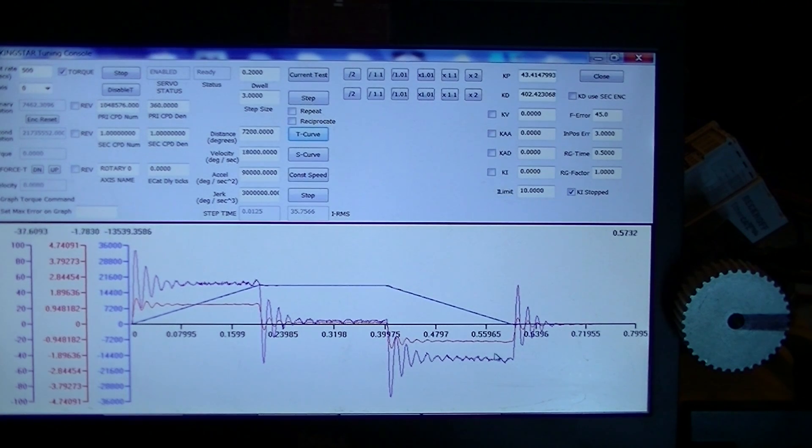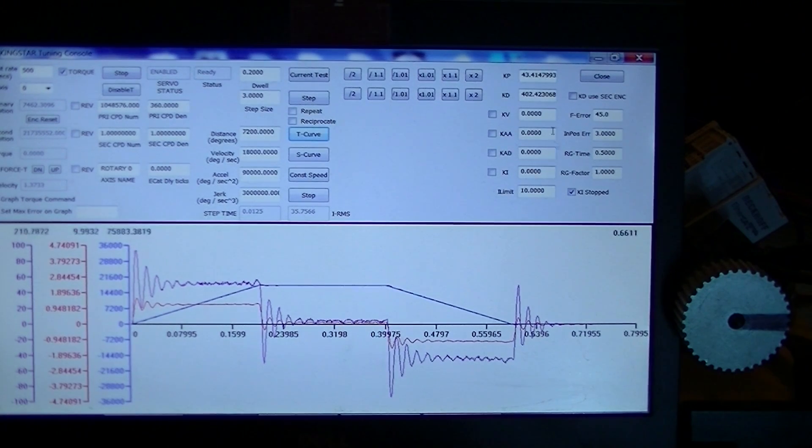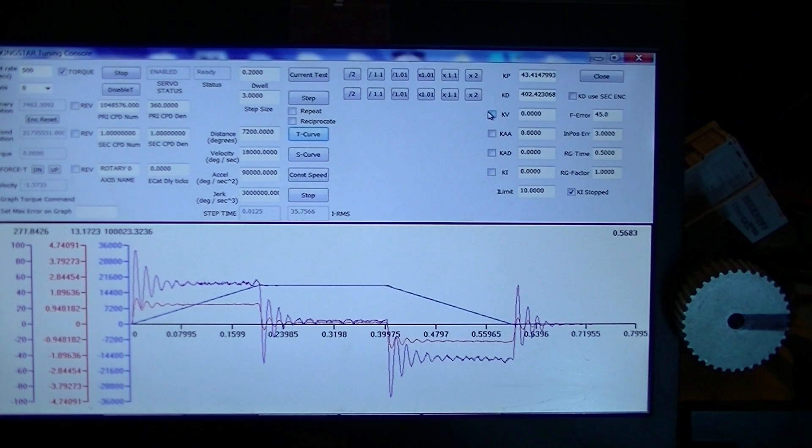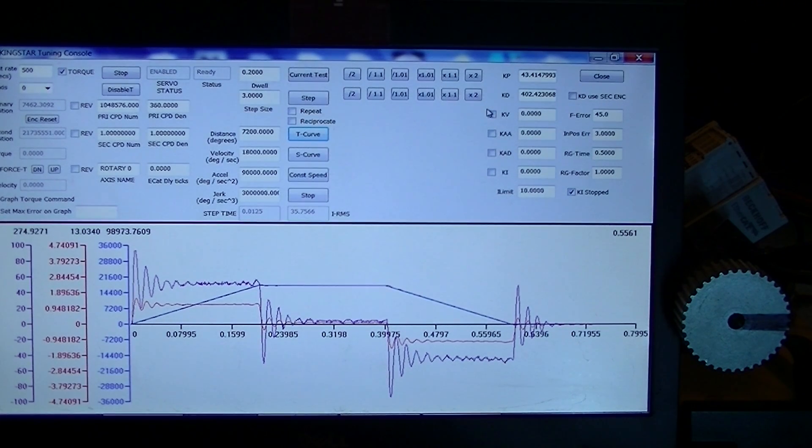What we're going to do now to try and get rid of this, we're going to go up to KV. KV basically says, I'm running at a reasonable speed. Just give me some assistance. Give me a few percentage points of torque output without requiring KP or KD to do it.